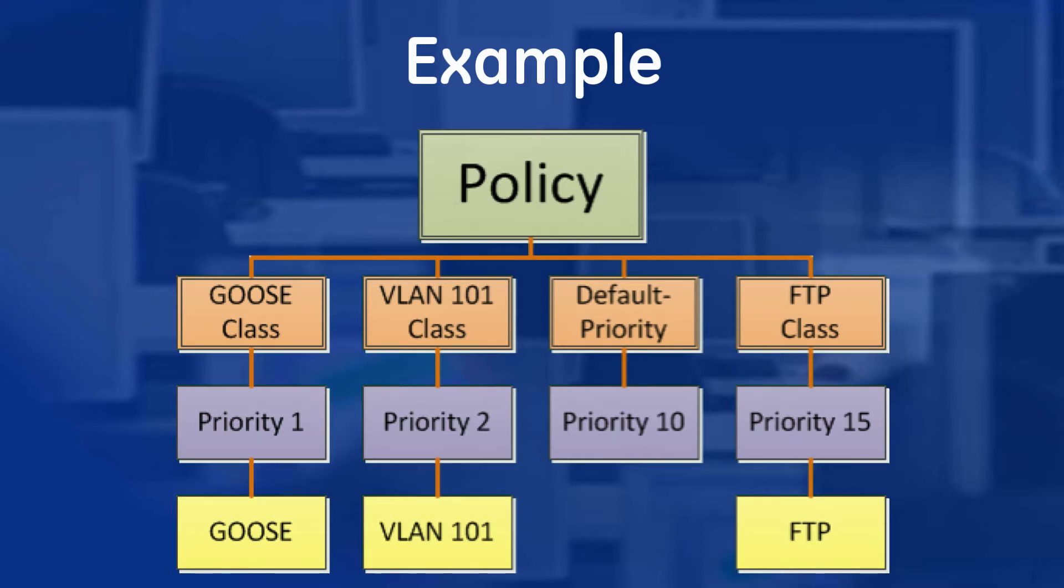You may have noticed that with this configuration we may have a conflict between the VLAN 101 classifier and the FTP classifier. For example, if FTP traffic comes in that is tagged with VLAN 101, currently it will be marked as priority 2. Since we want all FTP traffic to be a low priority, we will need that classifier to be processed first. Therefore, it would be a good idea to set the metric on the FTP classifier to something lower than 10.